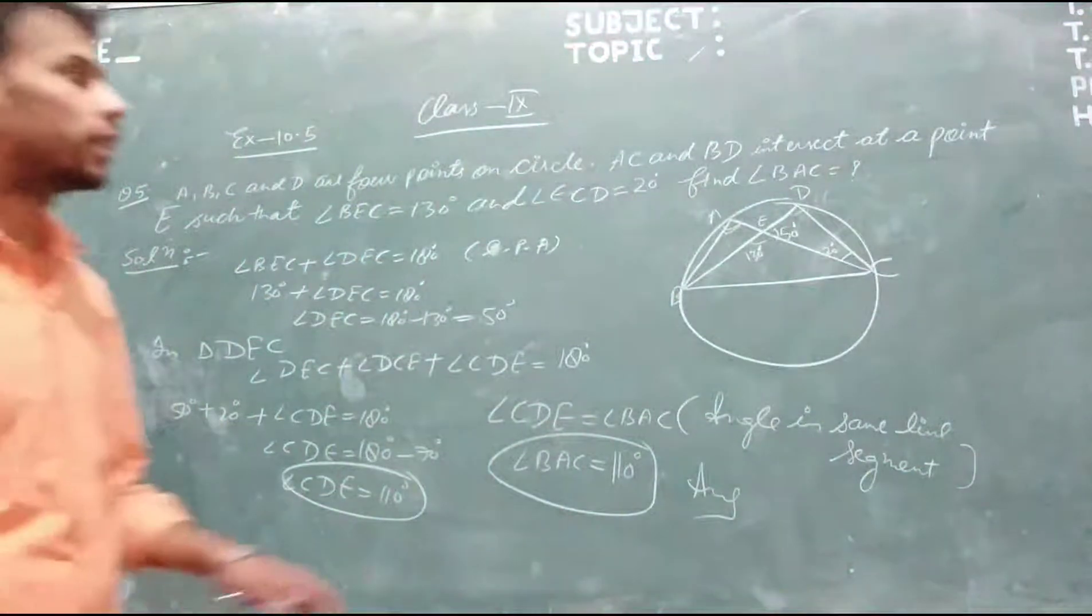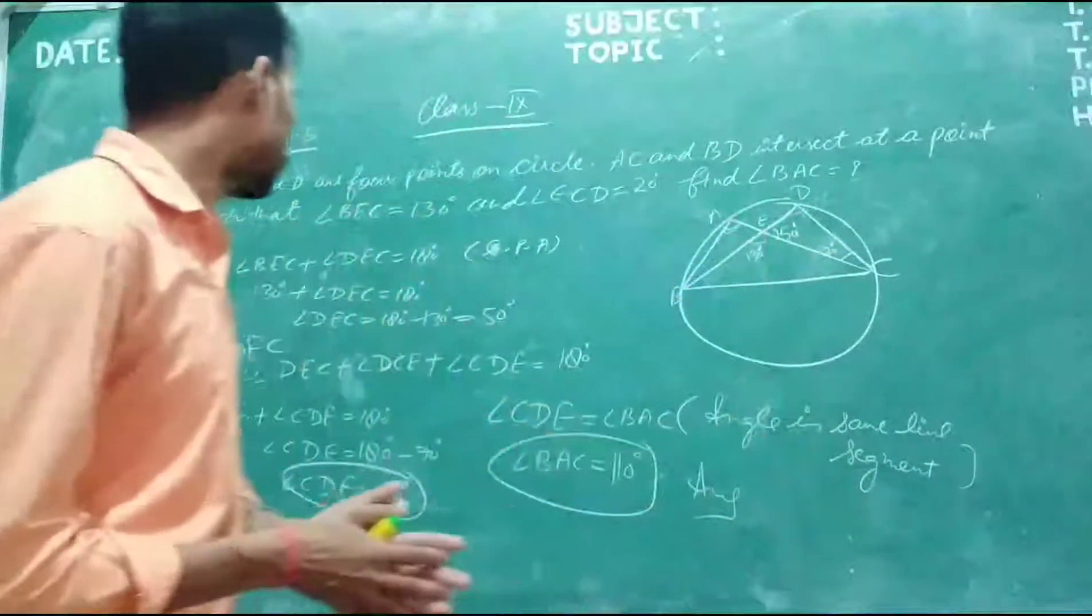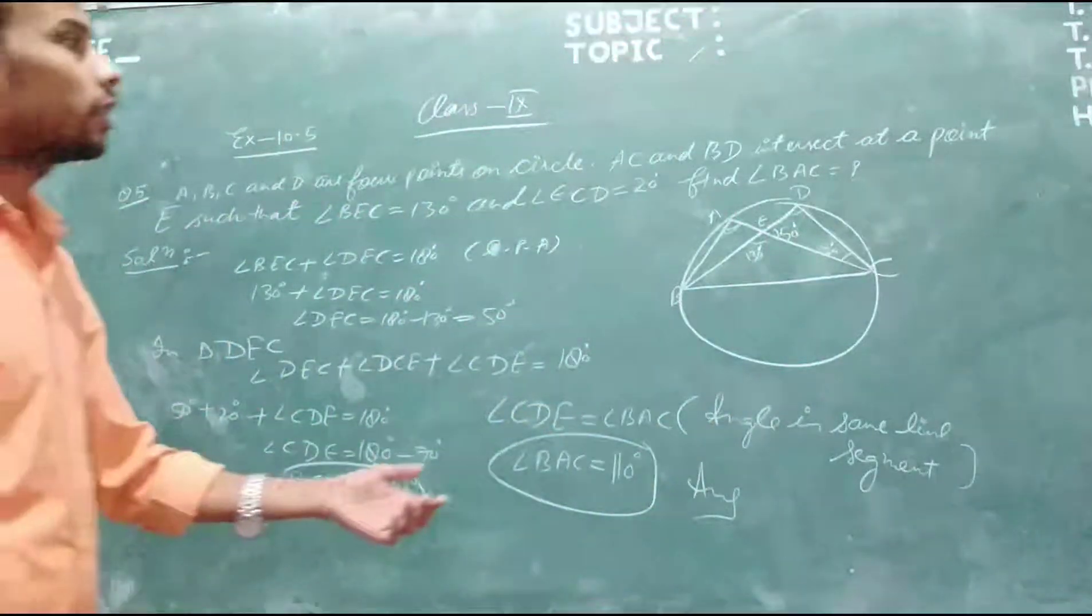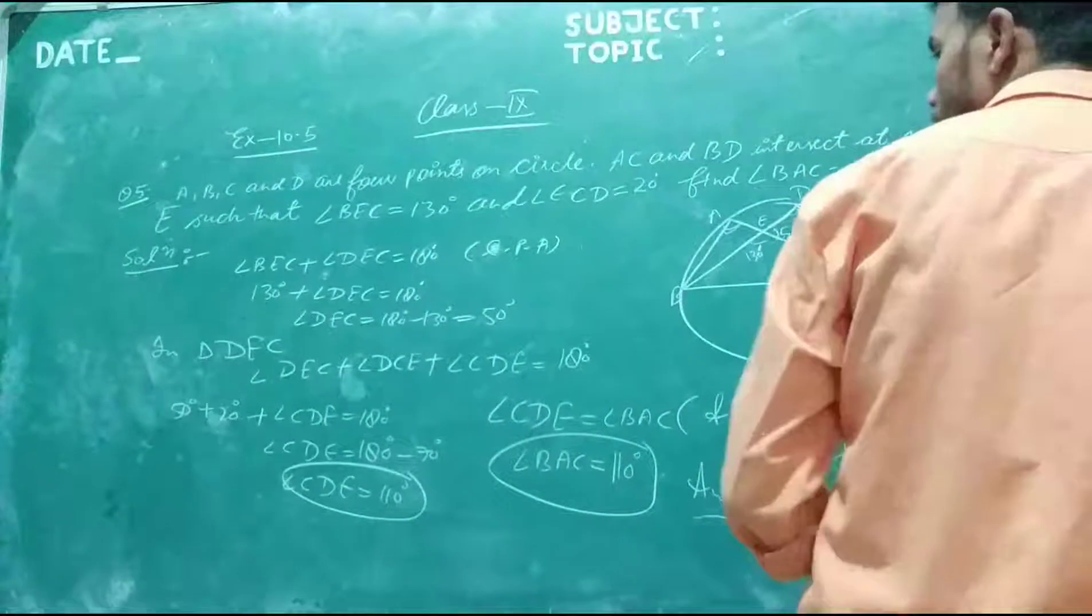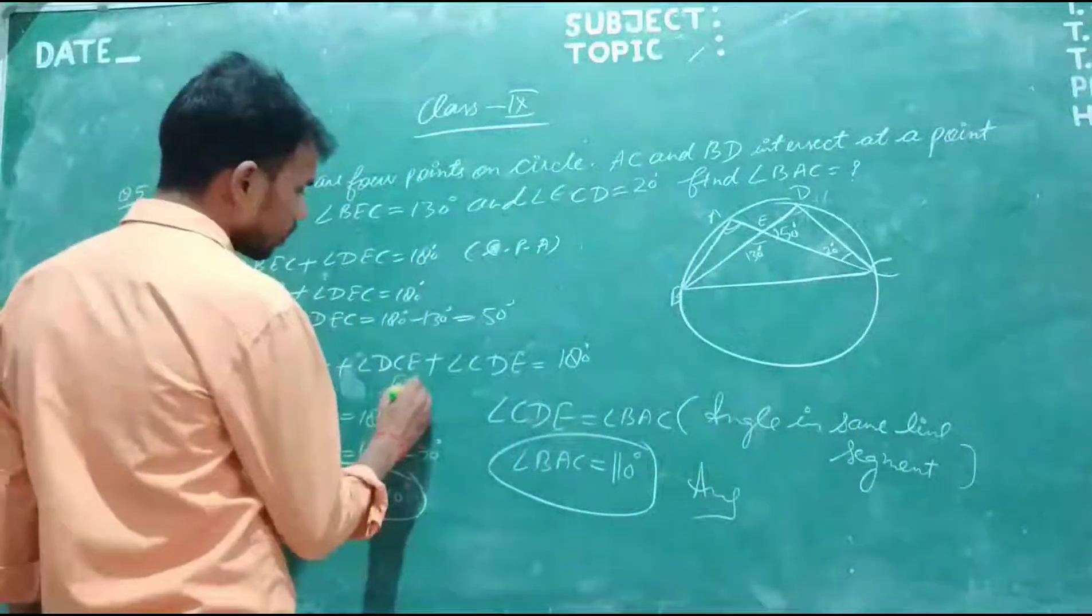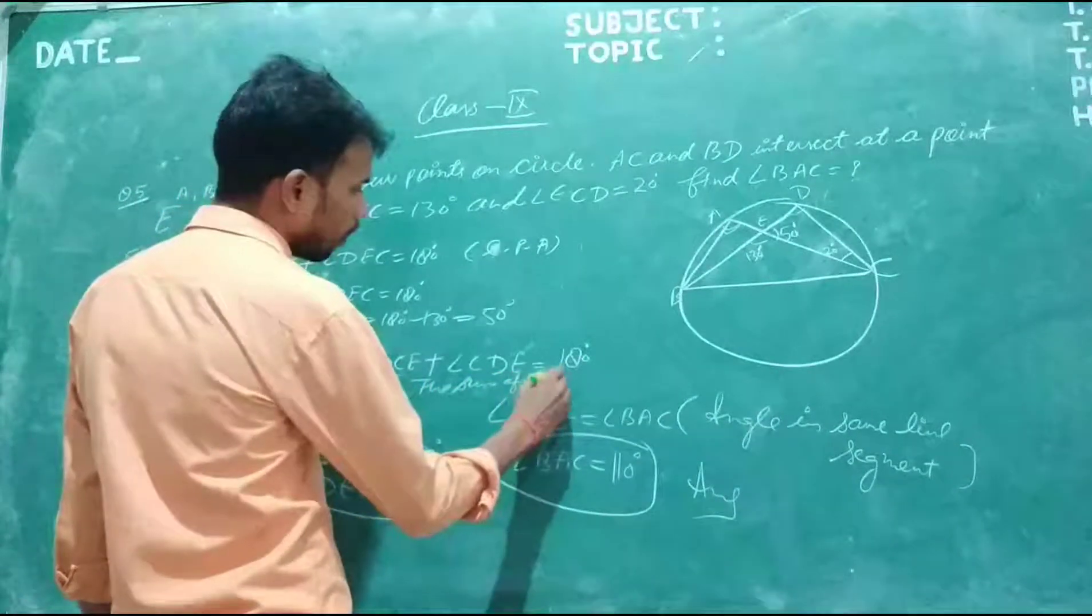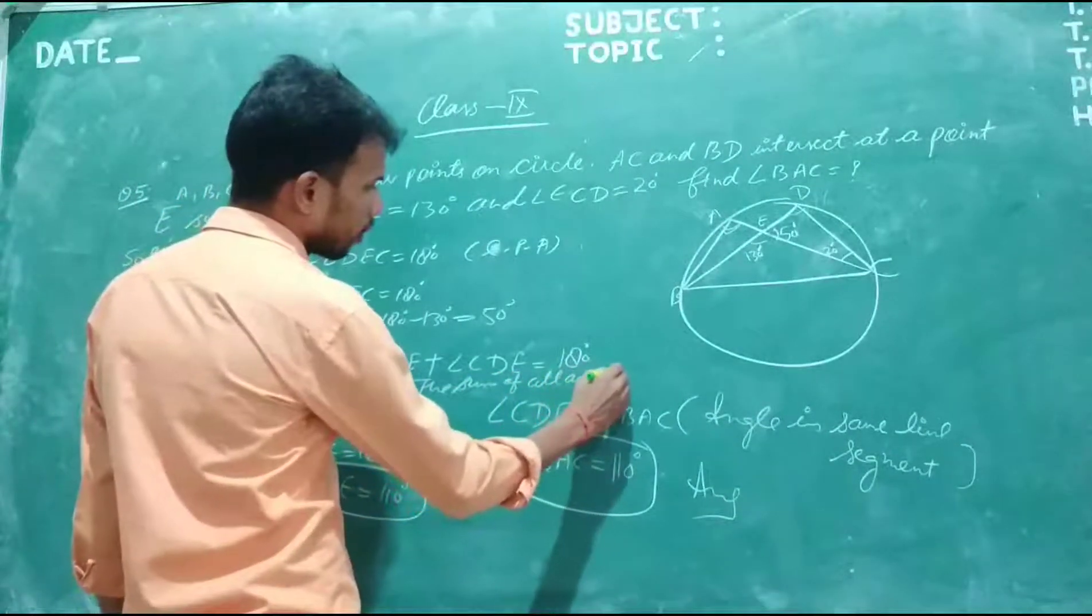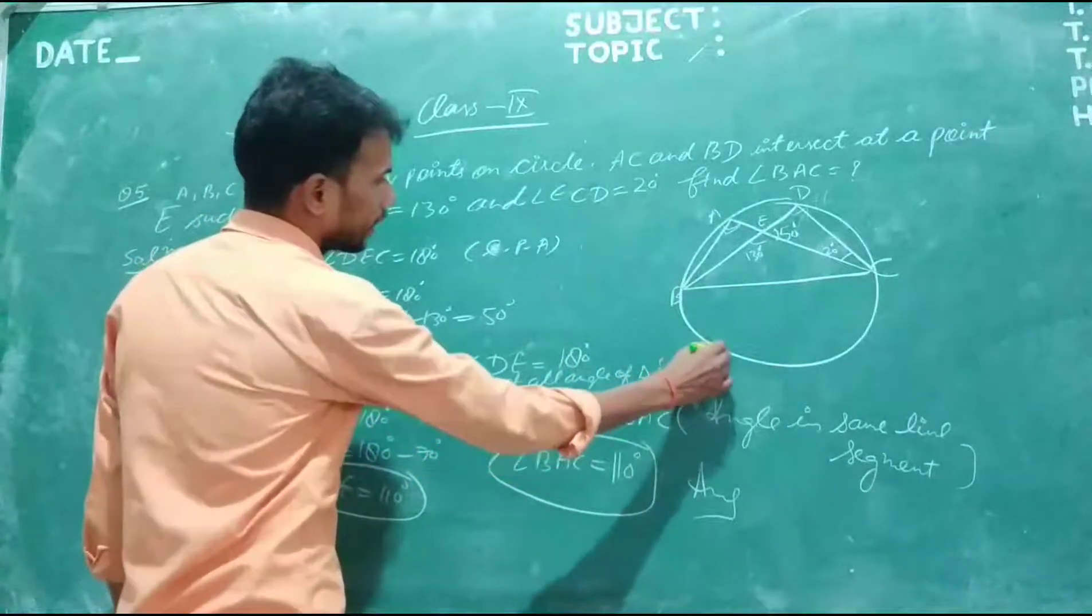Now, in triangle DEC, angle DEC plus angle ECD plus angle EDC equals 180 by the sum of angles of a triangle. Here is 130 degrees.